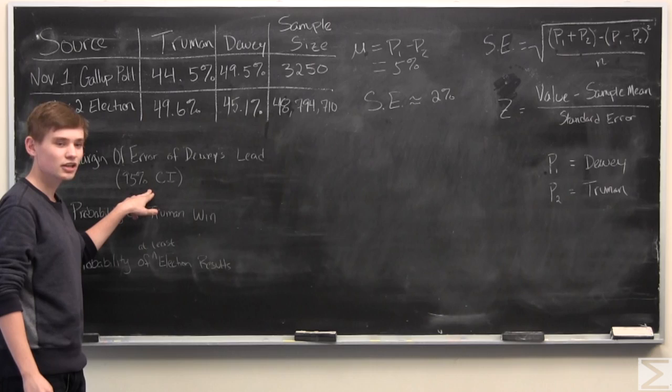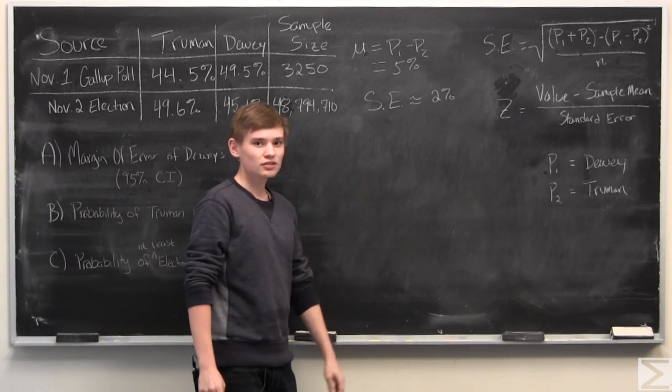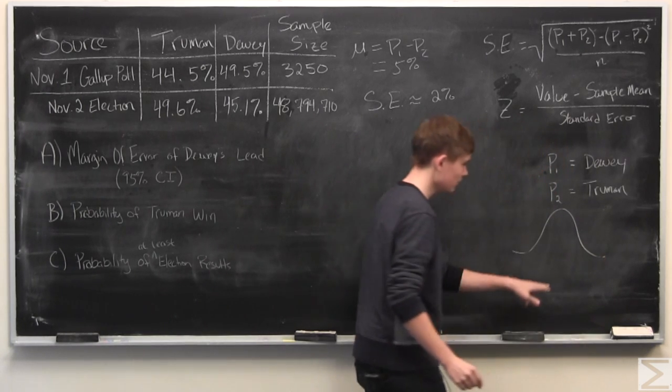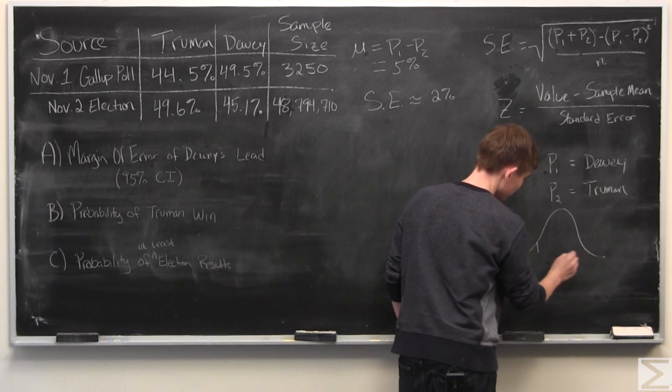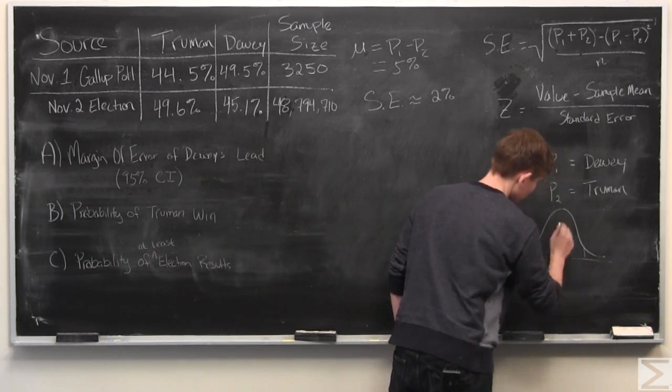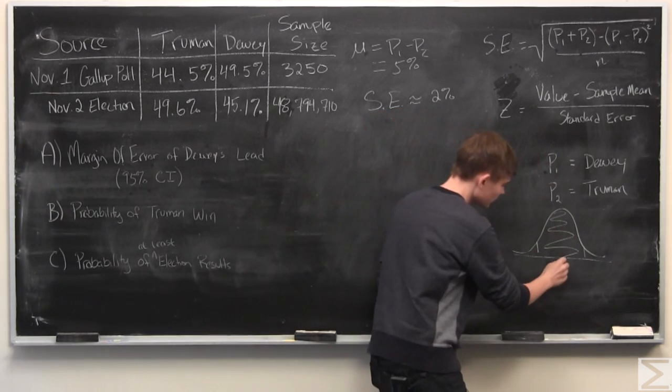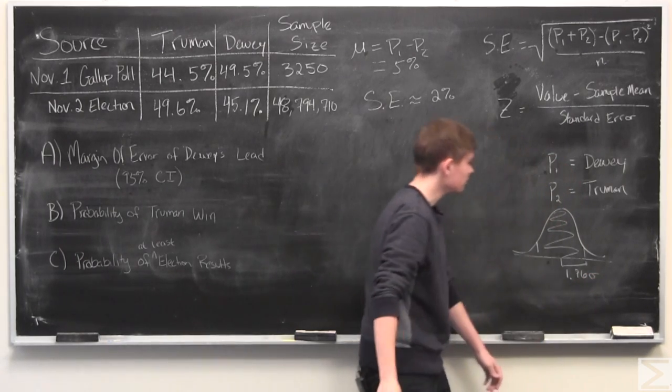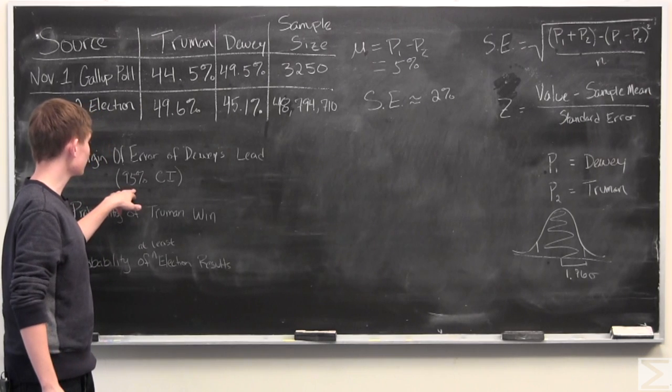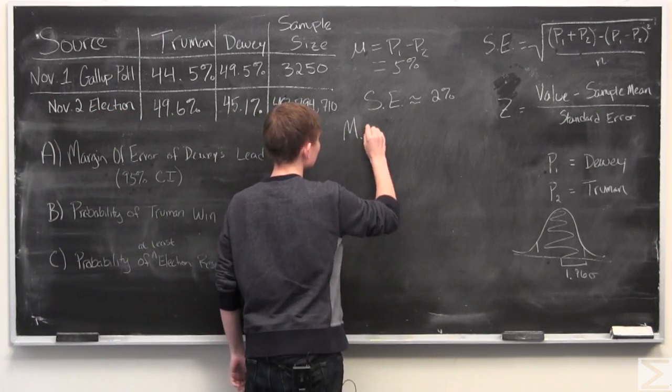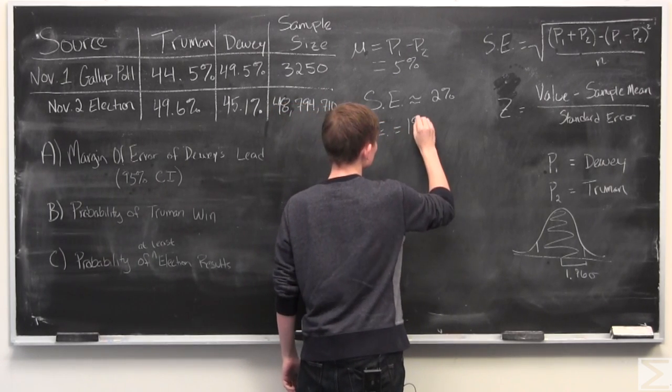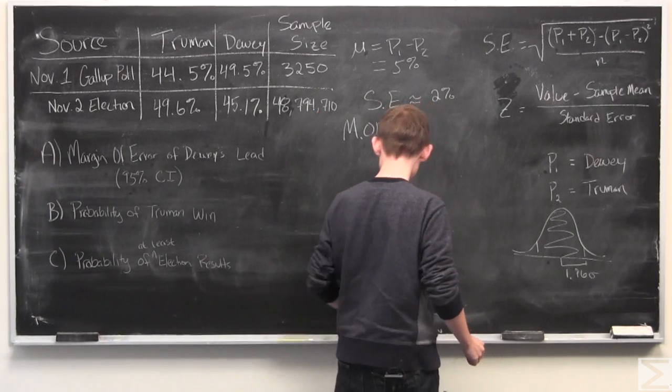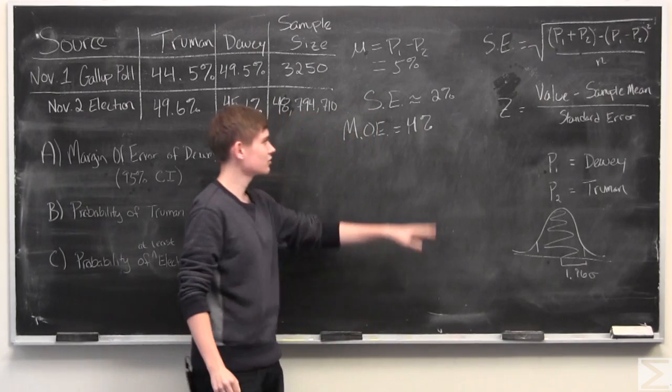And now, to find the margin of error with a 95% confidence interval, we need to use the central limit theorem to estimate it. And what the central limit theorem states is that with a normal curve, about 95% of the area of the curve is going to be within 1.96 standard deviations from the mean. And what this means is for the margin of error of 95% confidence interval, what we have to do is multiply our standard error by 1.96. And we get roughly 4%, because it's about twice.